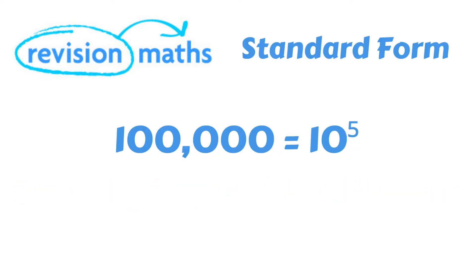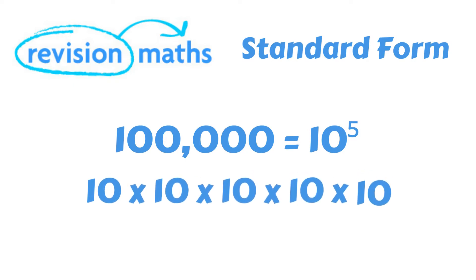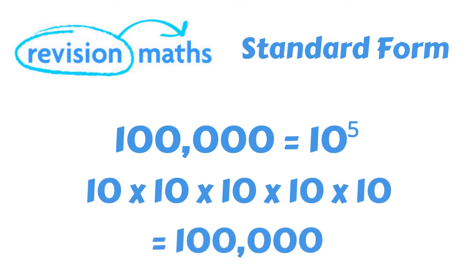So let's go through some examples of how standard form can be written. 100,000 can also be written in standard form as 10 to the power of 5, as 10 times 10 times 10 times 10 times 10 equals 100,000.